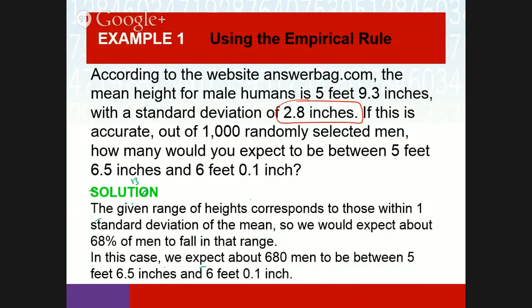A student asks: 5 feet 9.3 inches — is that the median? The answer is it's the mean, the median, and the mode. You cannot do anything unless it's a normal distribution, and it's only a normal distribution if the mean, median, and mode are all equal.